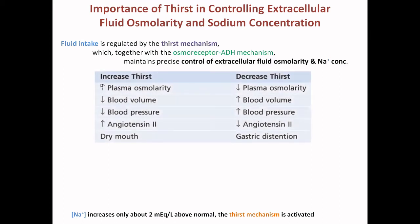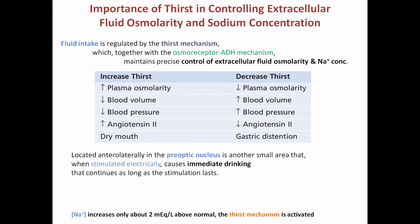What increases thirst? Exactly the same conditions discussed earlier: high plasma osmolarity, low blood volume, low blood pressure, high angiotensin, dry mouth, or dryness in the esophagogastric area — these are forces driving water intake. The opposite decreases thirst: low plasma osmolarity, high blood pressure, high blood volume, low angiotensin, and gastric distension — meaning we have enough water in the body and do not need to drink more.